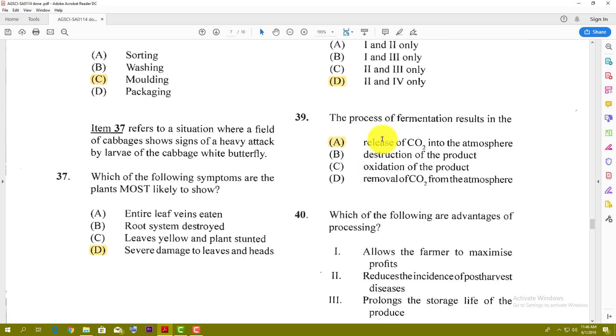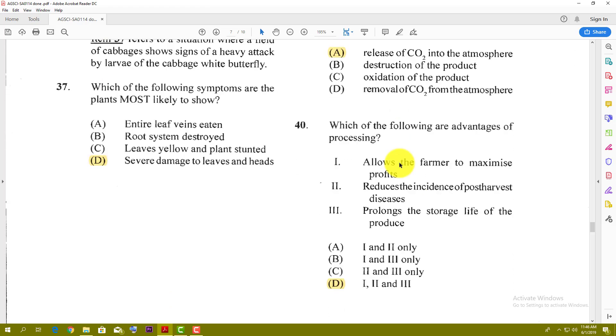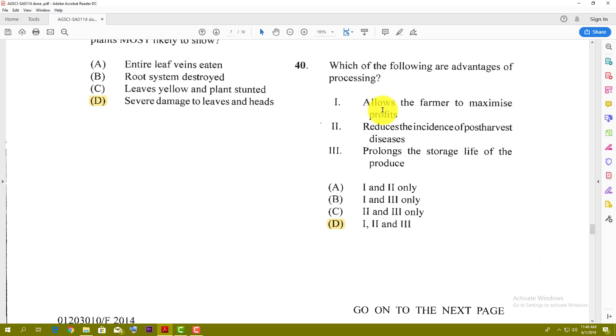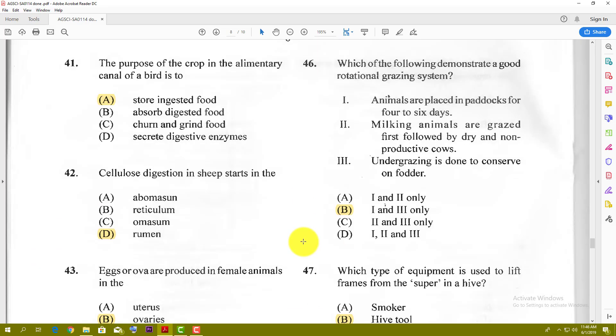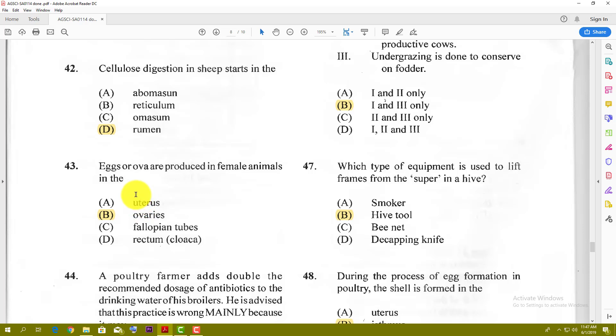Number 39: The process of fermentation results in the release of CO2, carbon dioxide, into the atmosphere. Number 40: Which of the following are advantages of processing? It allows farmers to maximize profit, yes. It reduces incidence of post-harvest diseases, yes. Prolongs the storage life of the produce, yes. The answer is D, 1, 2 and 3. Number 41: The purpose of the crop in the alimentary canal of the bird is to store ingested food. The crop is the protruding part of the digestive system and it can store food there temporarily. Number 42: Cellulose digestion in sheep starts in the rumen. The rumen has all the bacteria to break down that stuff. Number 43: Eggs are produced in a female animal in the ovaries. The eggs are released from the ovaries.